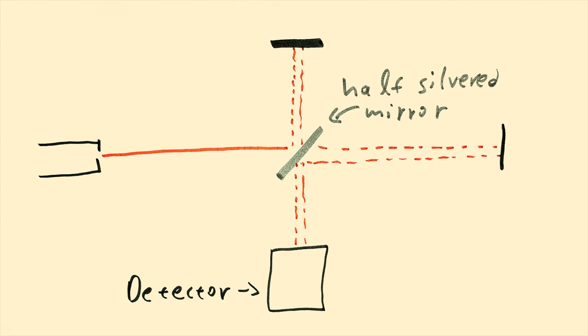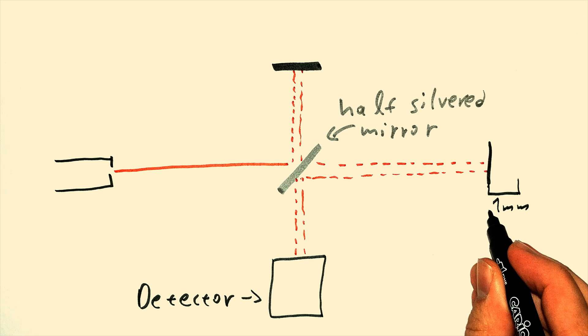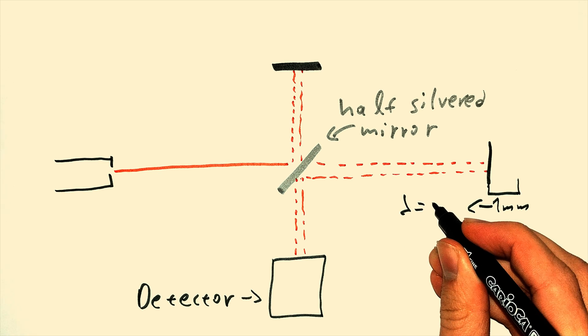Now, you have to ask yourself, how much did I need to move one of the mirrors backwards or forwards, in order to get from double intensity to zero intensity? One millimeter, then the wavelength of the light is four millimeters.